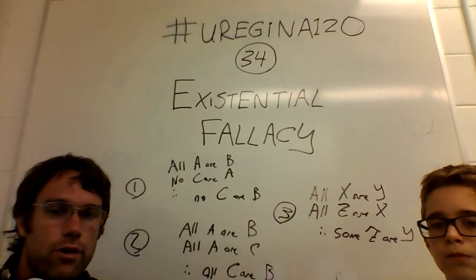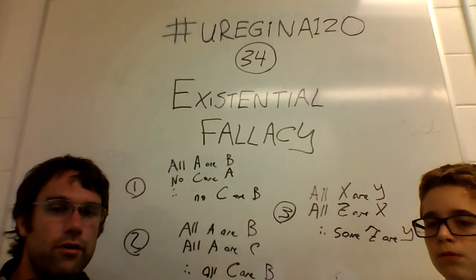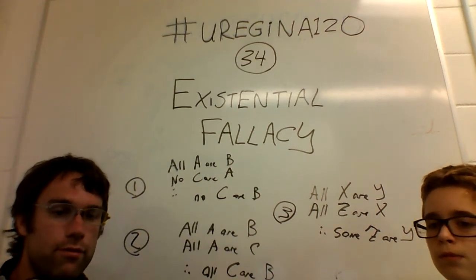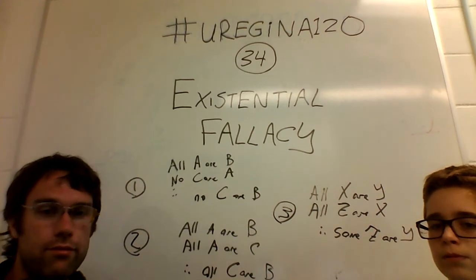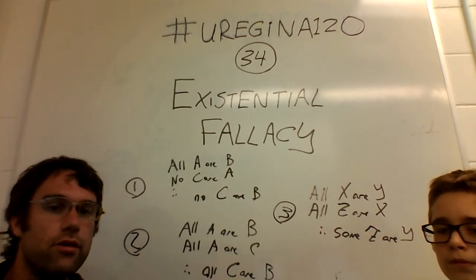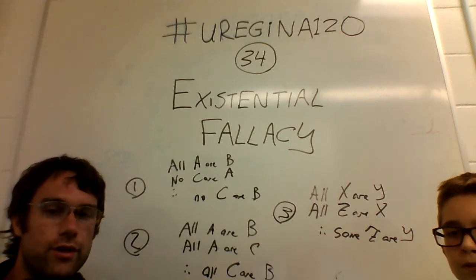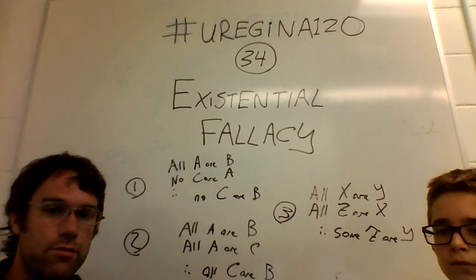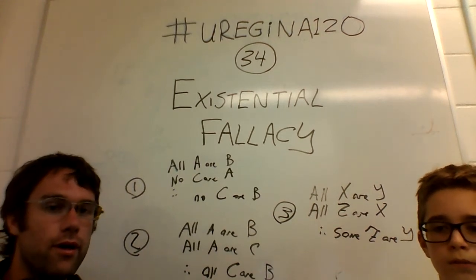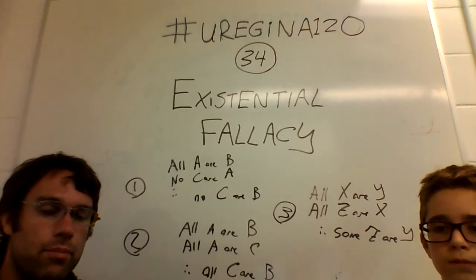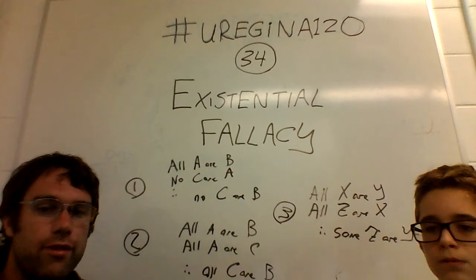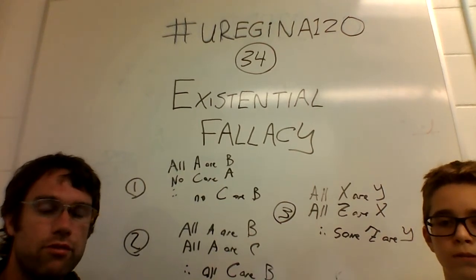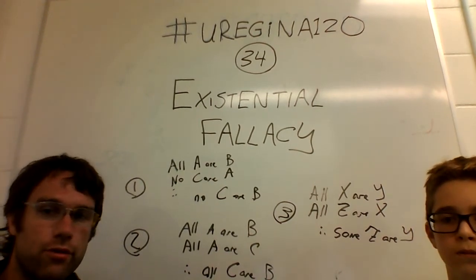However, there are a lot of situations where you're not necessarily going to be able to make that assumption. If you can prove that all classes are non-empty — which we'll talk about a little bit in the next video — then that's also okay. But if it's possible that they can be empty or cannot exist, then you have to be careful that you don't actually commit this fallacy.